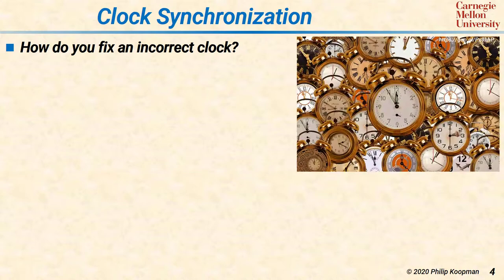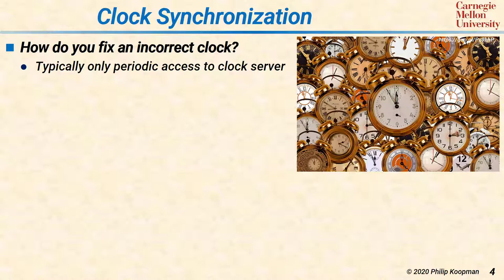Regardless of whether you care more about precision or accuracy, you need to do some sort of clock synchronization. This is a notoriously difficult problem to get exactly right. If you have a local clock that's incorrect — either because it is inaccurate or it has drifted too far from other clocks in the system — you need to fix it. Typically, you can only do this periodically because fixing a clock requires some sort of network message, and you cannot saturate the network with timekeeping requests.